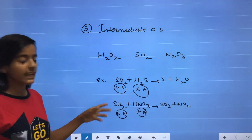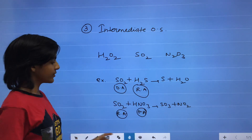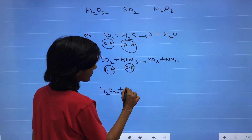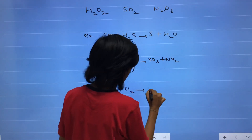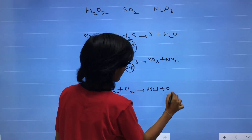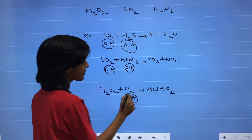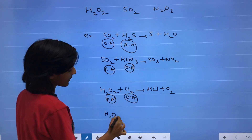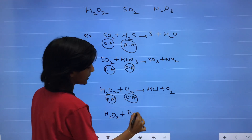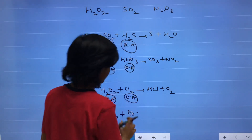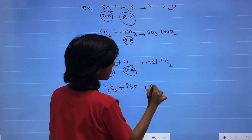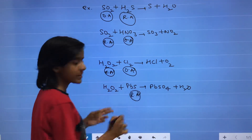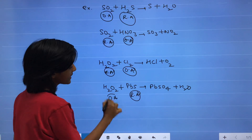So a compound may act as both an oxidizing agent and a reducing agent. For H2O2: when it reacts with Cl2, it forms HCl and O2 — Cl2 is the oxidizing agent and H2O2 is the reducing agent. When H2O2 reacts with PbS, it forms PbSO4 and H2O — PbS is the reducing agent and H2O2 is the oxidizing agent.